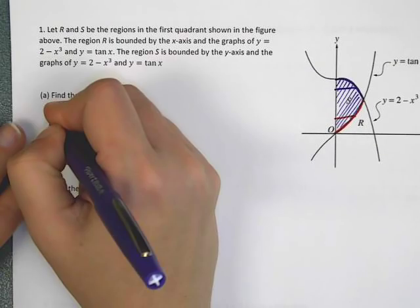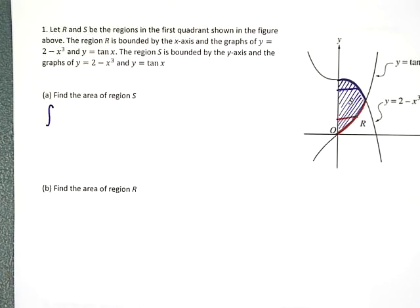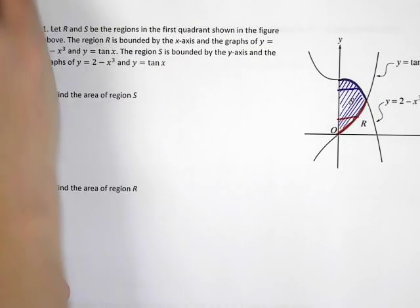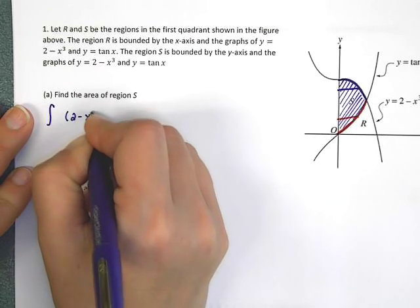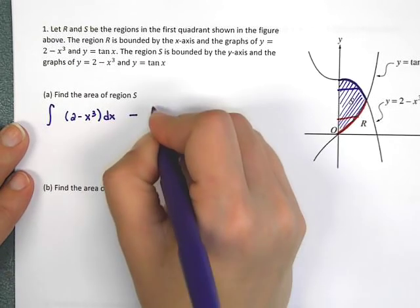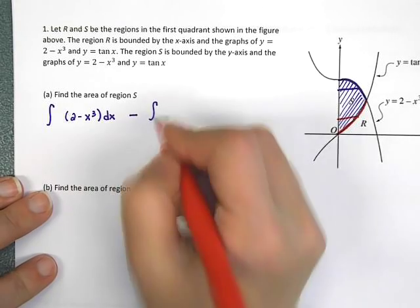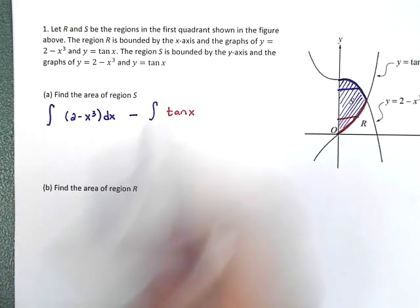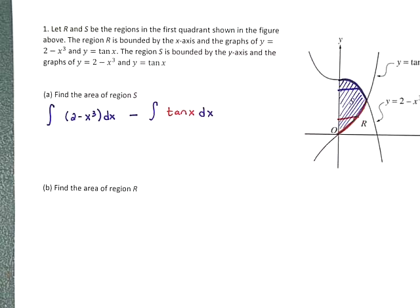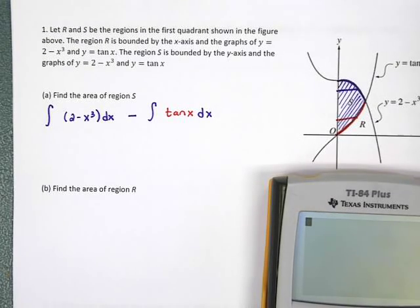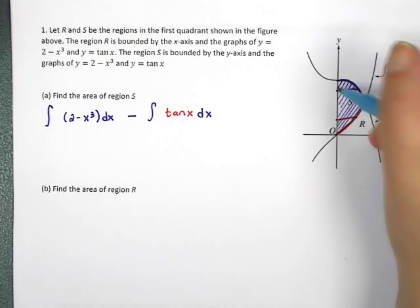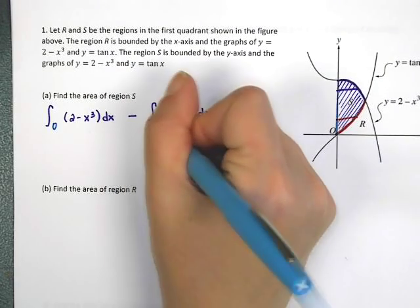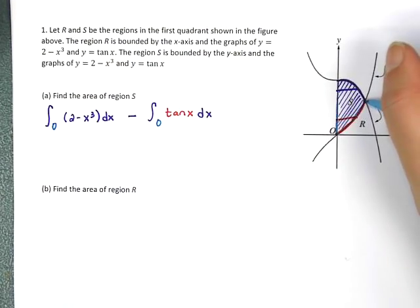I'll set up two integrals: the integral of 2 minus x cubed dx minus the integral of tangent x dx. For the bounds, the left bound is 0. For the right bound, I need the intersection point. On the calculator, I graph both functions, make sure I'm in radians mode, zoom to a standard window, then use second, calculate, intersection, and get close to the intersection point.